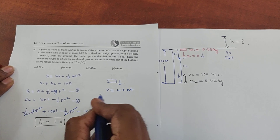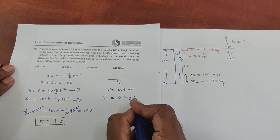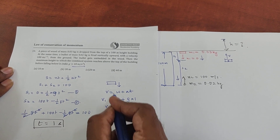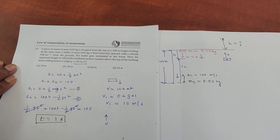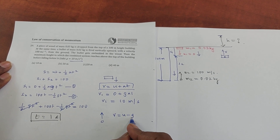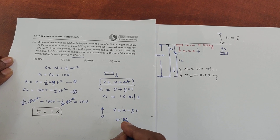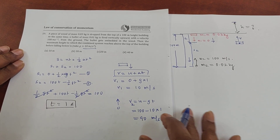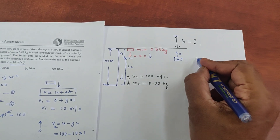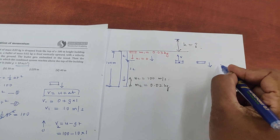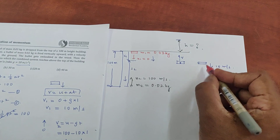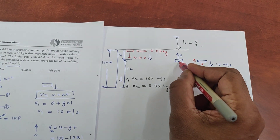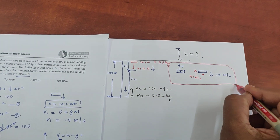Using v = u + at, the velocity of the wooden piece is 0 plus g into 1 second, which equals 10 meters per second downward. The velocity of the bullet is 100 minus g·t = 100 minus 10 = 90 meters per second upward. So just before hitting, the piece of wood is coming down at 10 m/s, and the bullet is going upward at 90 m/s. They hit and we apply the law of conservation of momentum.